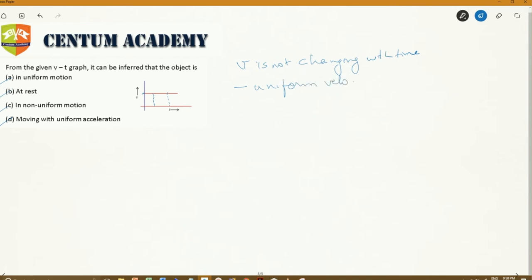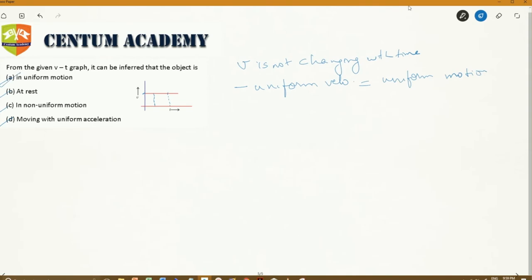What is that option? Uniform velocity is also called uniform motion, so option A is correct. This is the correct option.